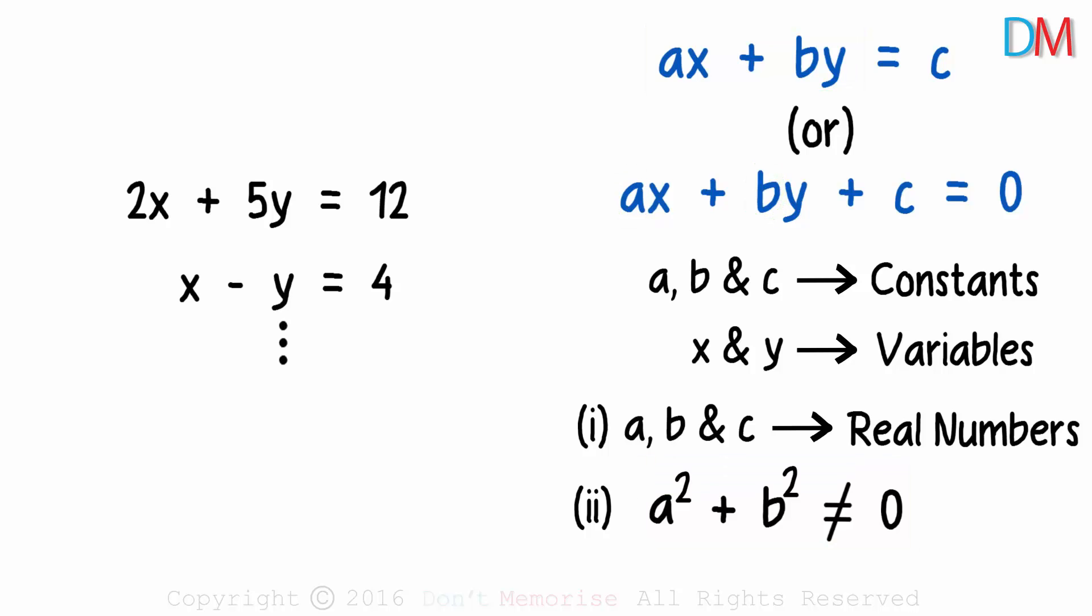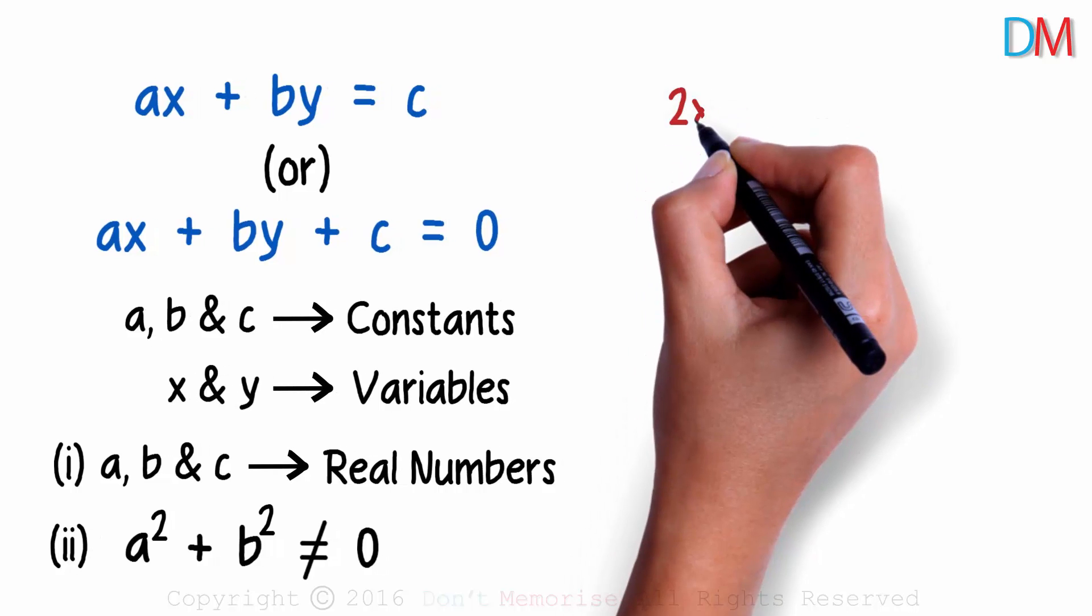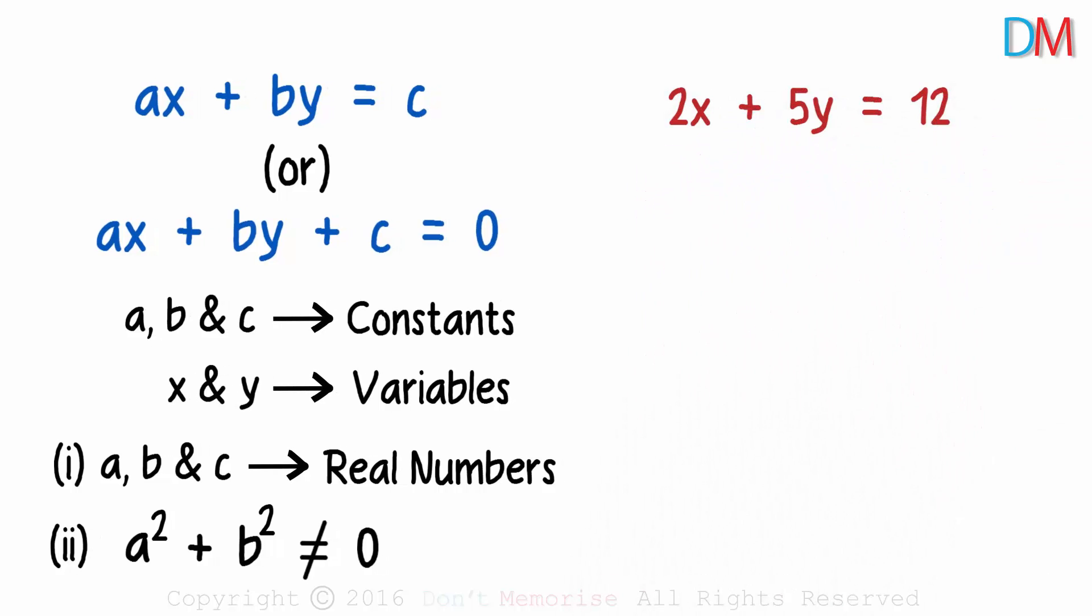Now let's just consider the first equation we saw: 2x plus 5y equals 12. What is the solution to this equation? The solution to a linear equation in two variables is a pair of values, one for x and the other for y, which makes both sides of the equation equal.